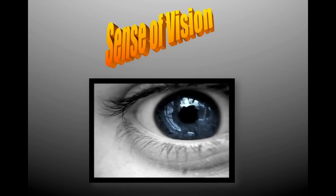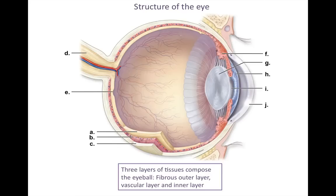Hi everybody, today we're going to take a look at the sense of vision. We're going to look at the eye in both structure and function and learn how we actually see things. We'll go through the eye and look at all the parts, and then in the rest of the lecture we'll explain what each of those parts does and how they all aid the overall goal of vision.